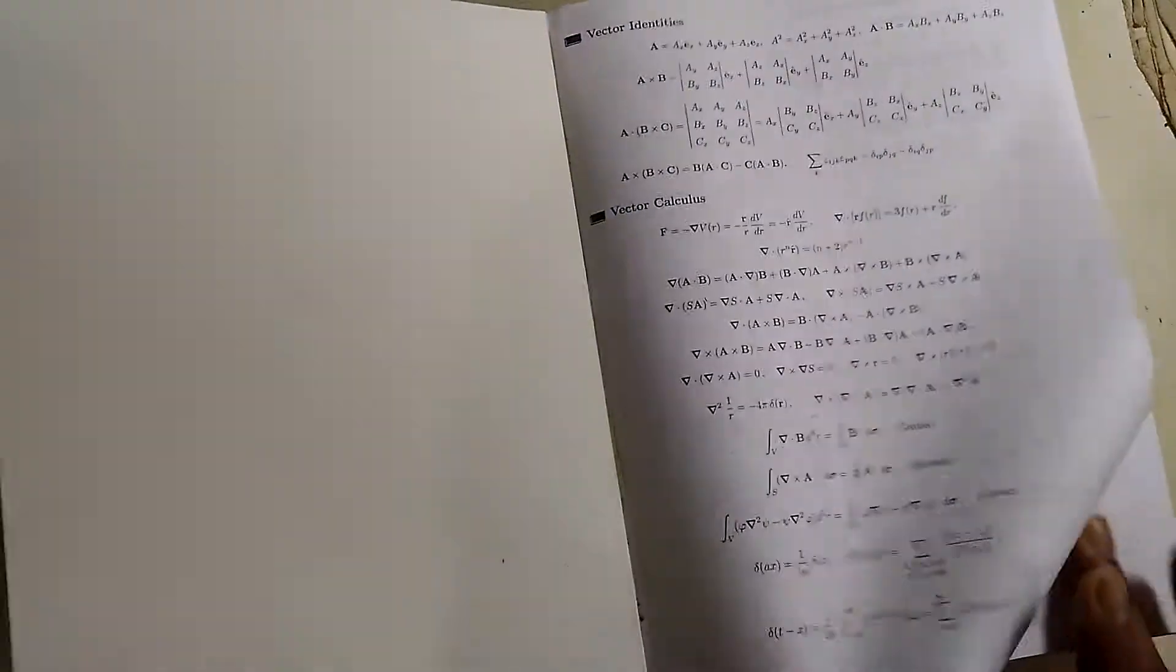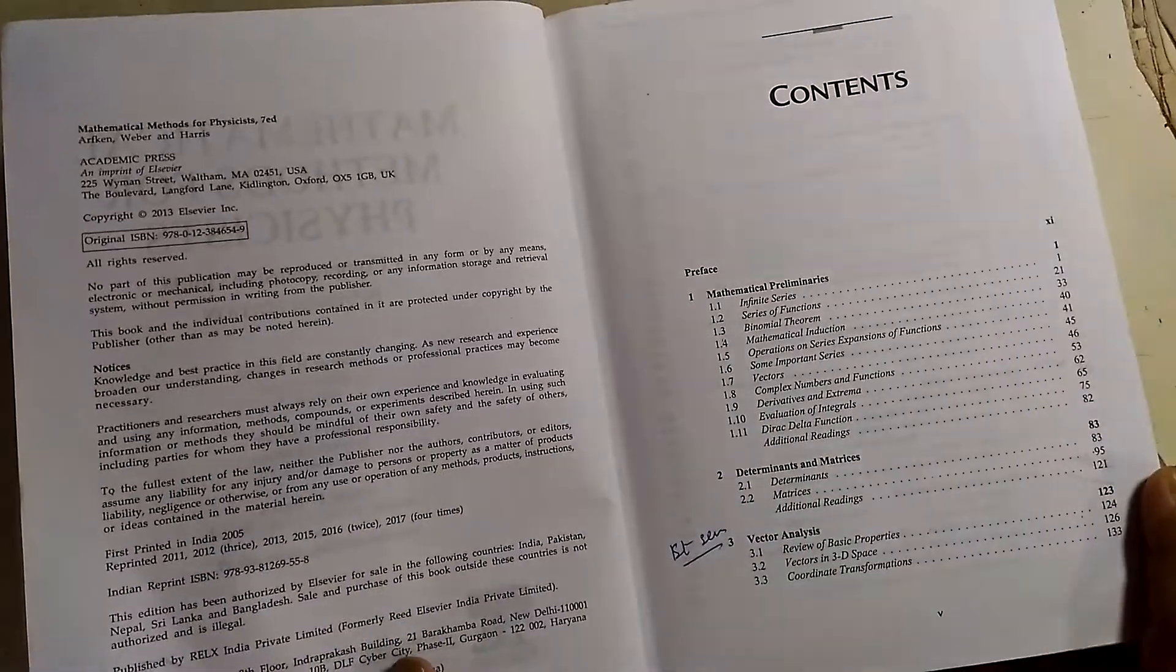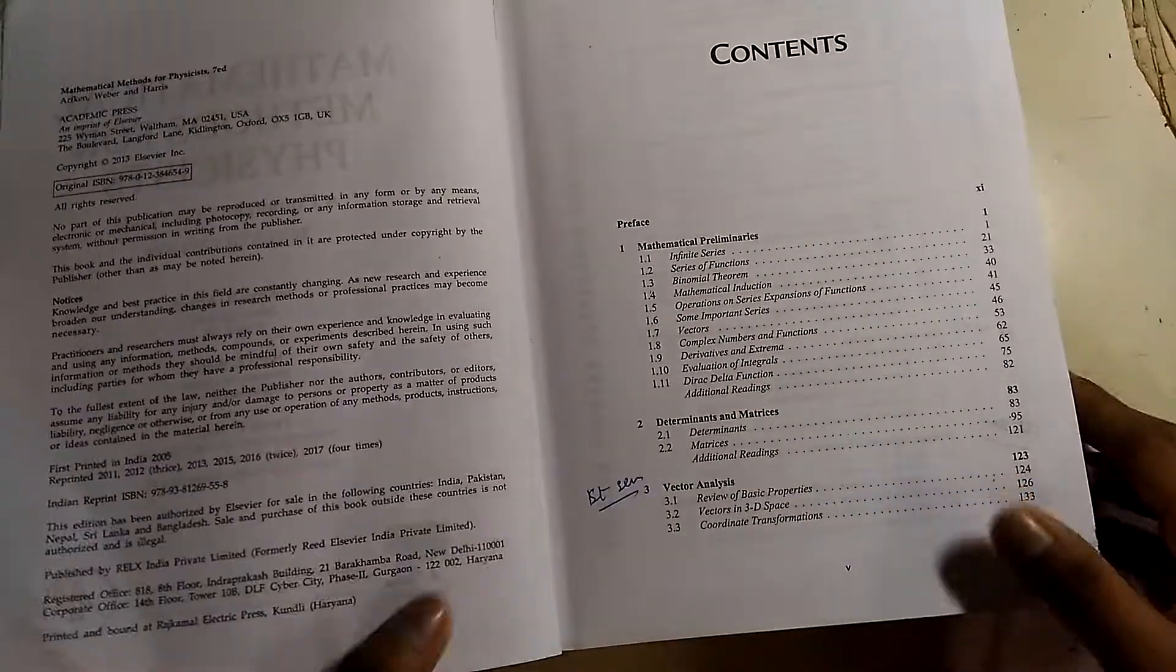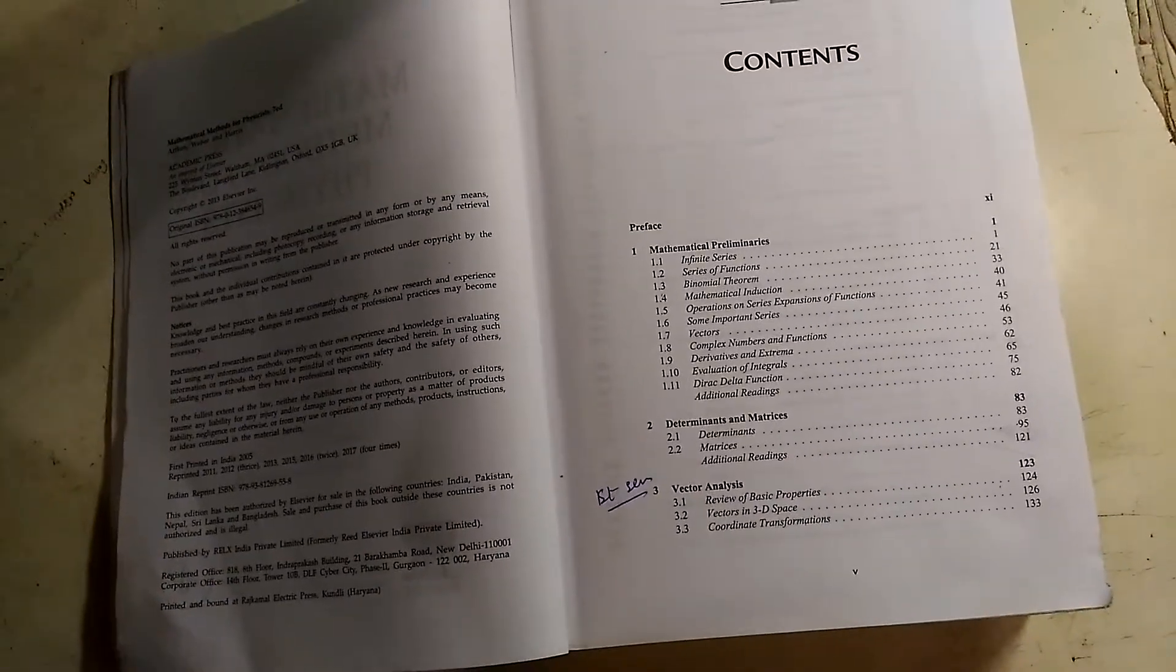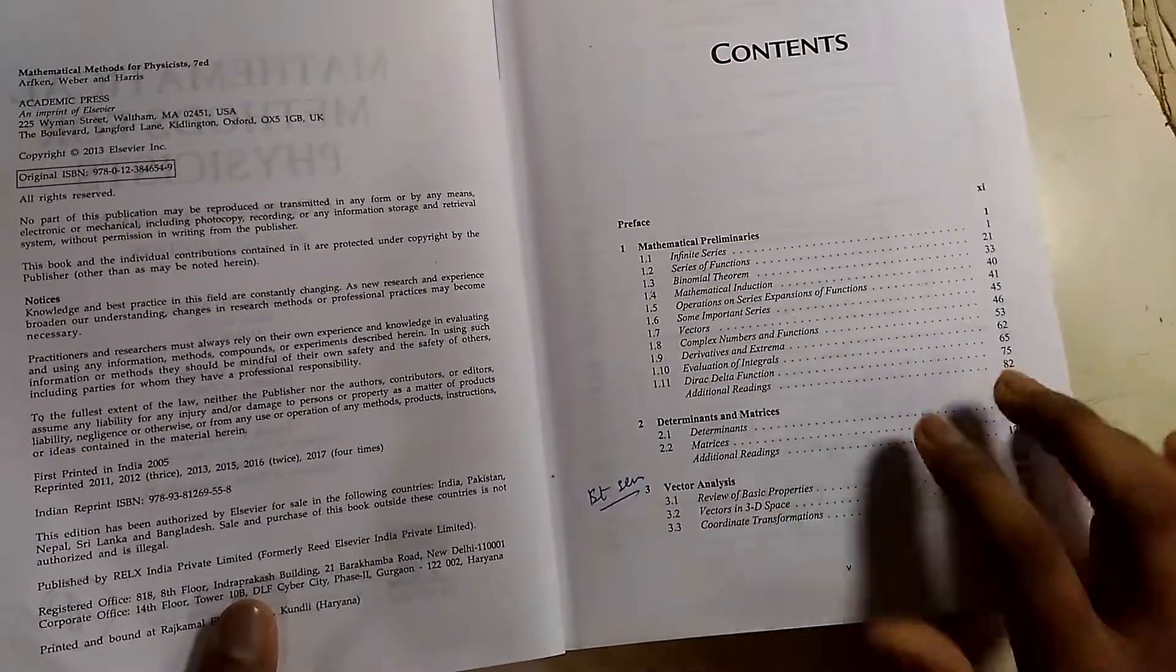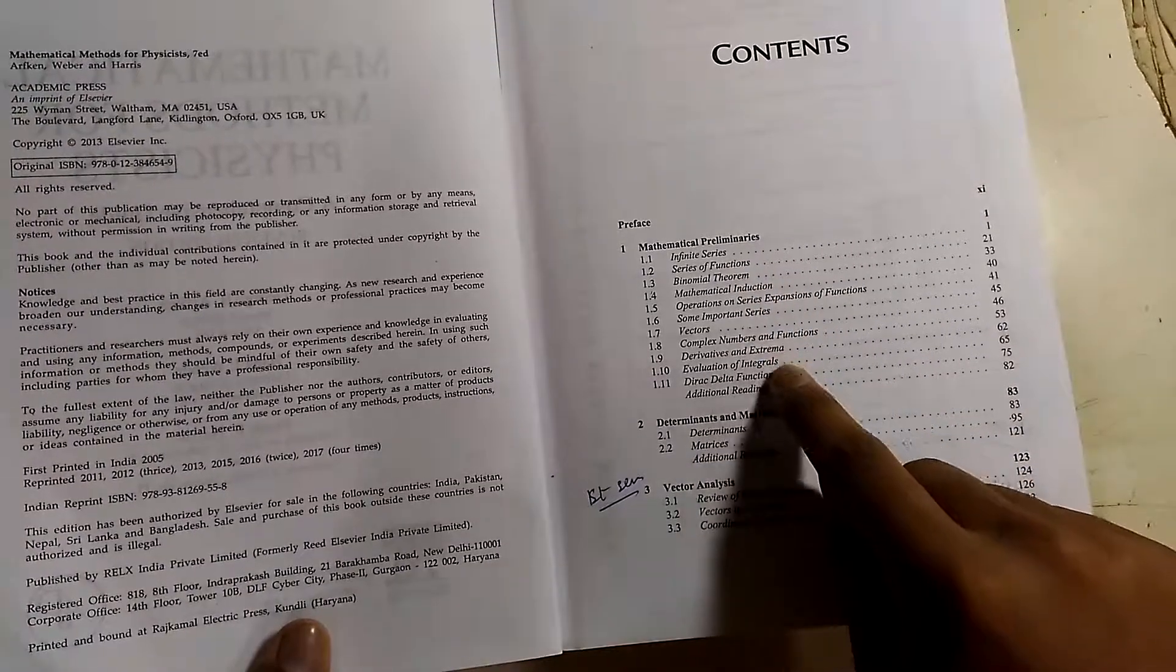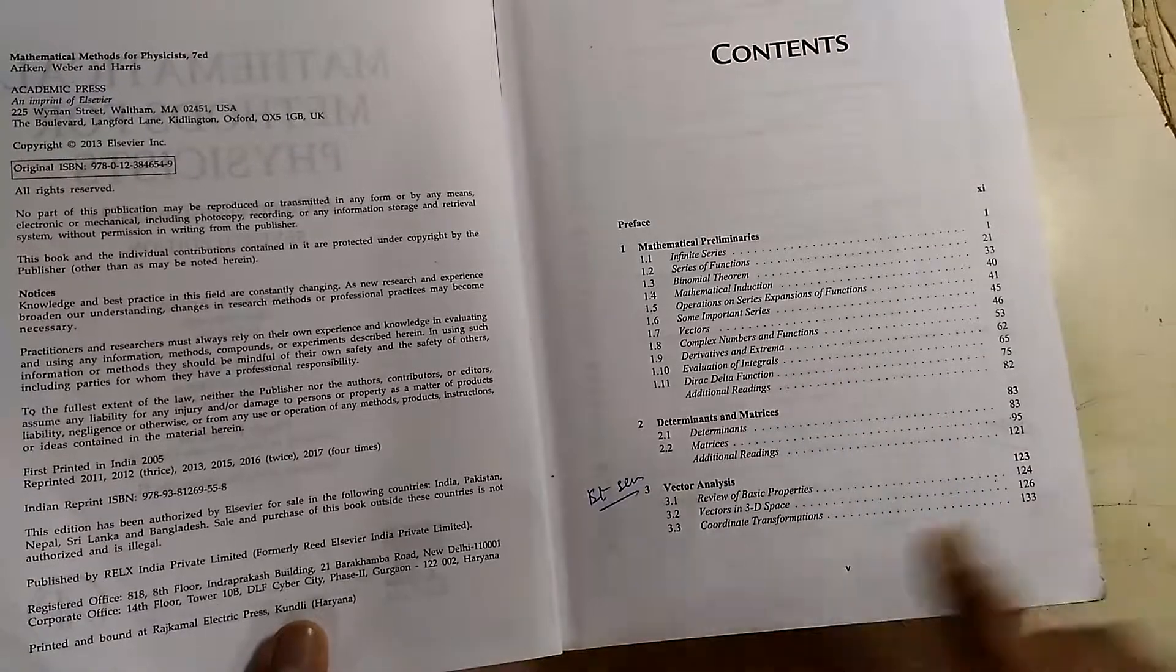I'm going to show you the chapters included in this book. The first chapter is mathematical preliminaries - there are infinite series, series of functions, binomial theorem, vectors, complex numbers, Dirac delta function and so on.